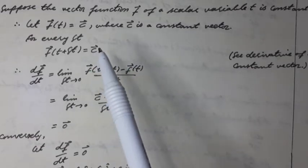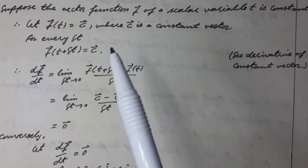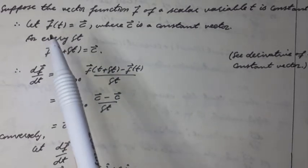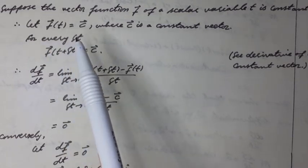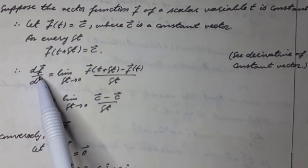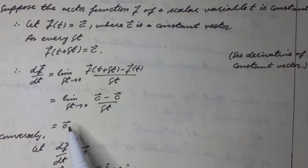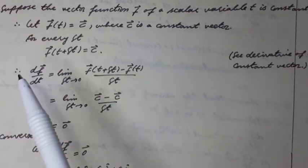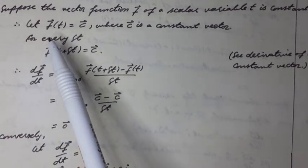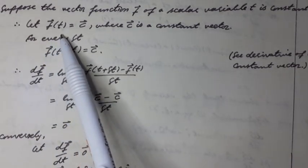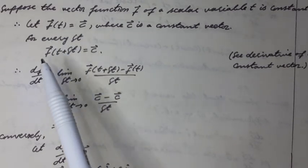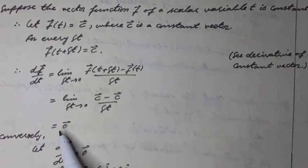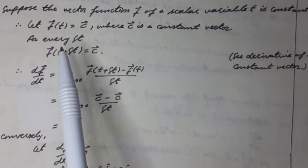Theorem: the necessary and sufficient condition for the vector function f of a scalar variable t to be constant is df vector over dt is equal to zero vector. Or equivalently, the vector function f of a scalar variable t is constant if and only if df vector over dt is equal to zero vector.